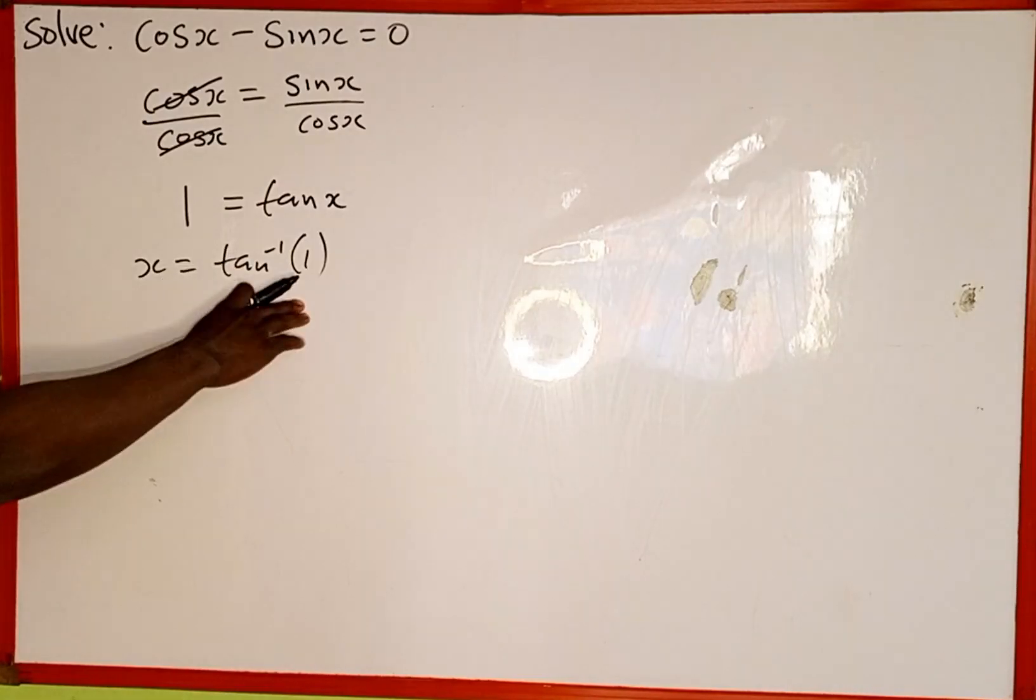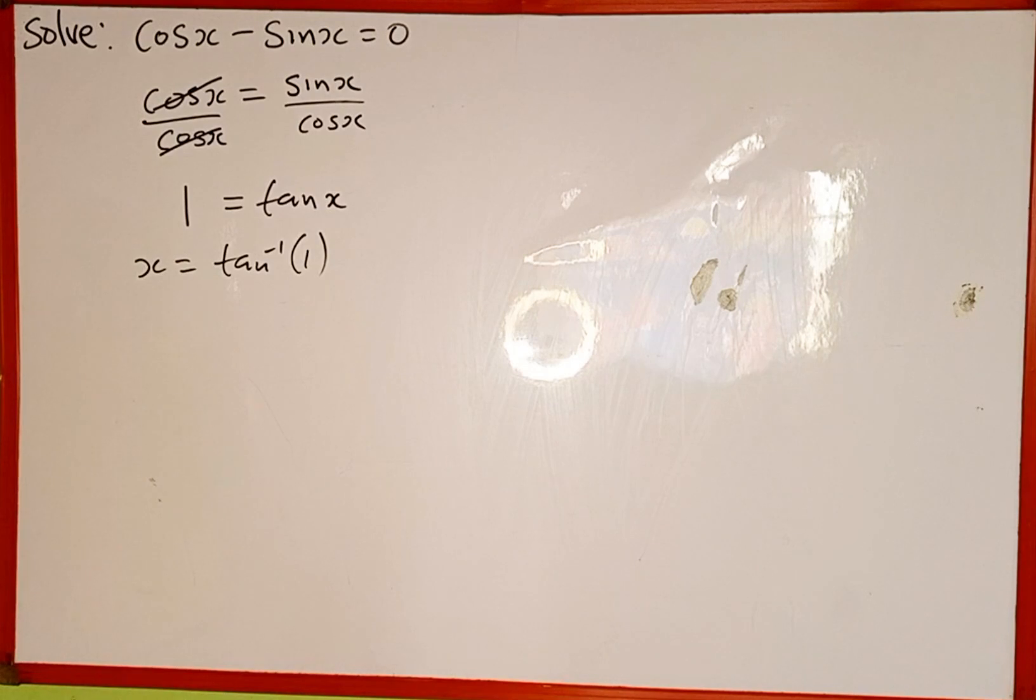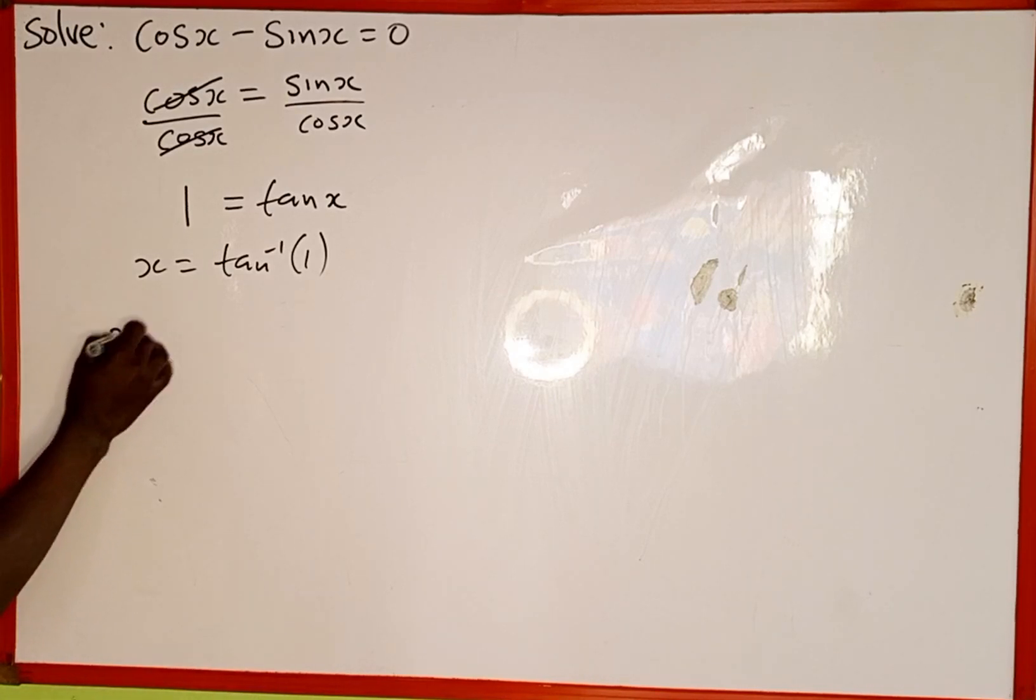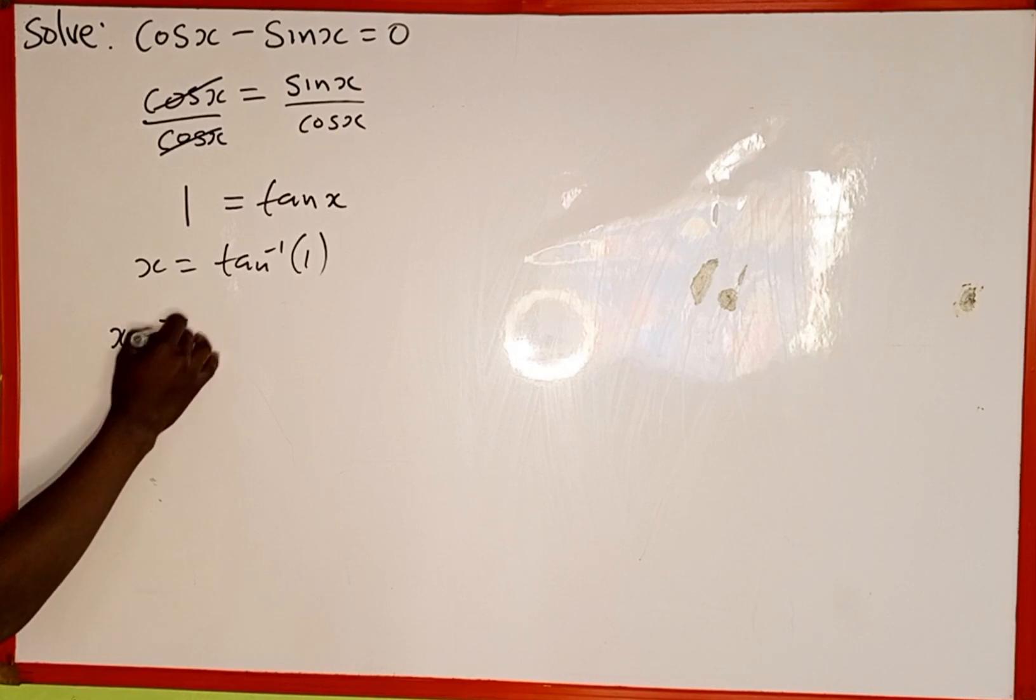x is equal to tan inverse of 1. But using this unit circle, the smallest positive angle for which the tangent is equal to 1 is pi over 4. So therefore, from unit circle, x is equal to pi over 4.